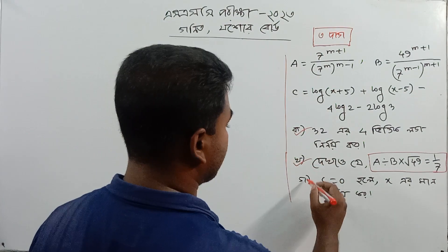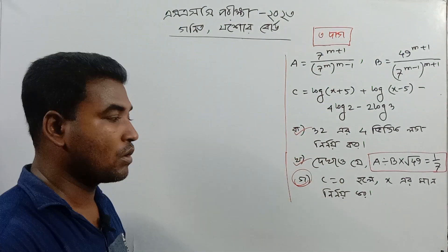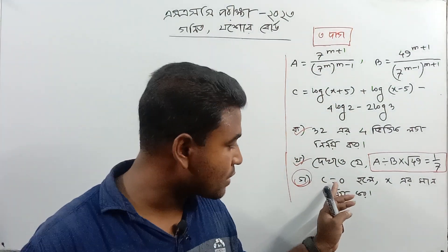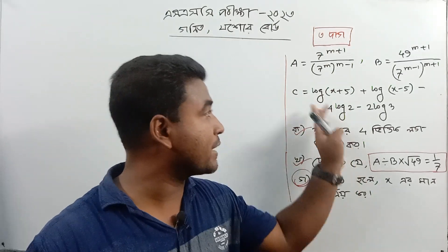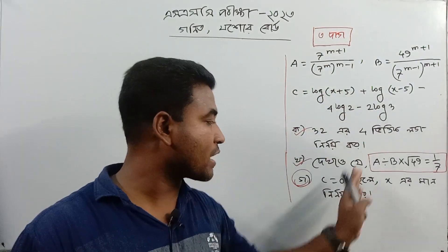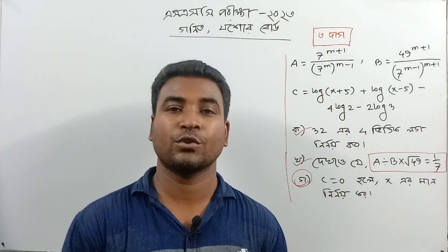So what did we do? GOR is equal to 0. If C is equal to 0, we will not call it.